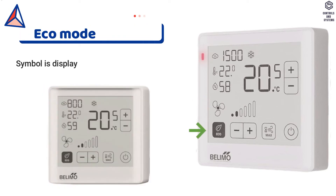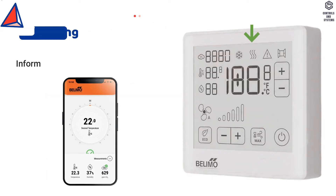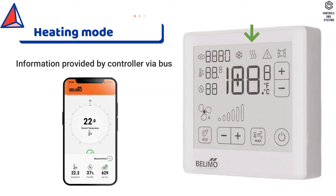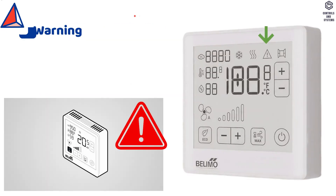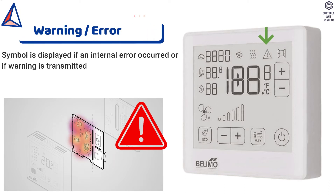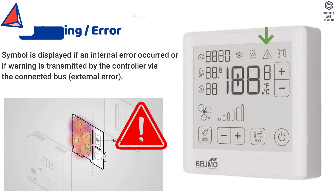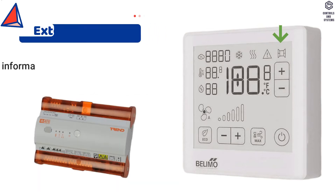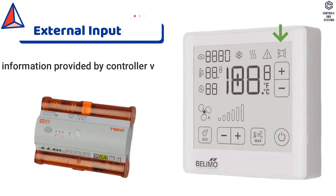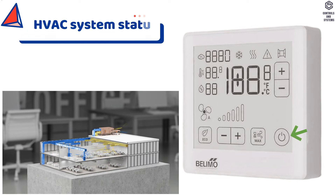Indicator 6: Eco mode — symbol is displayed if this mode is activated. Indicator 7: Cooling mode. Indicator 8: Heating mode. Indicator 9: Warning or error — symbol is displayed if an internal error occurred or if a warning is transmitted by the controller via the connected bus. Indicator 10: External input. Indicator 11: HVAC system status.